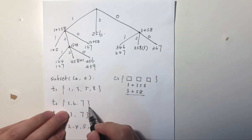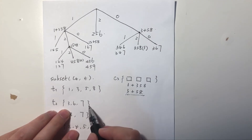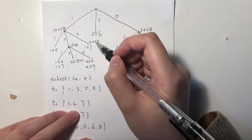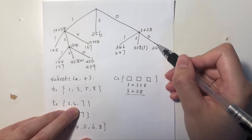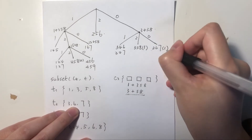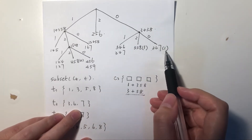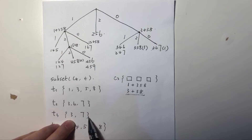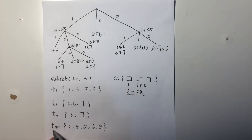For the second transaction, if it contains a candidate, it can only be {3,6,7}. We hash 3 — it goes to this branch — then hash 6, go to this branch, and there it is. So it contains candidate {3,6,7}. For the third transaction {3,7}, it only contains two elements, which means it cannot contain any level-3 candidates, so we can simply skip it.